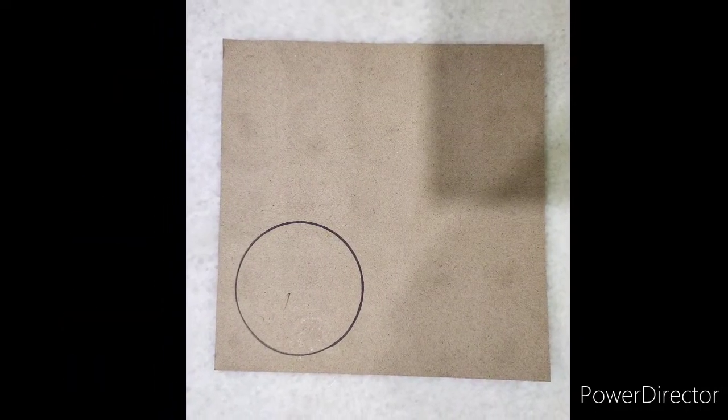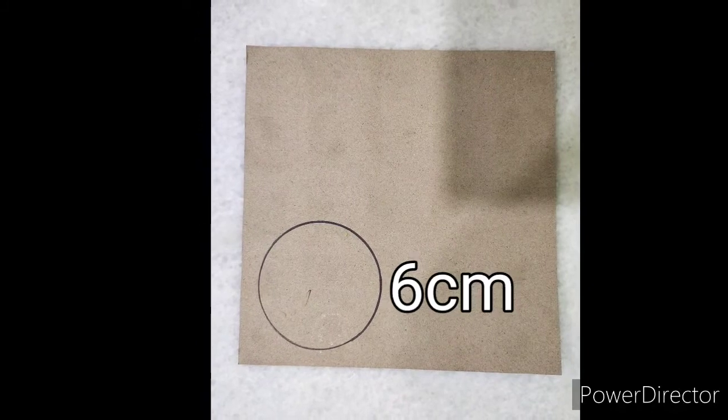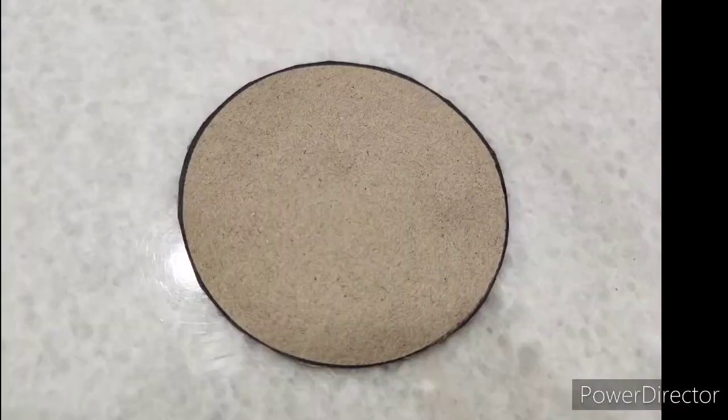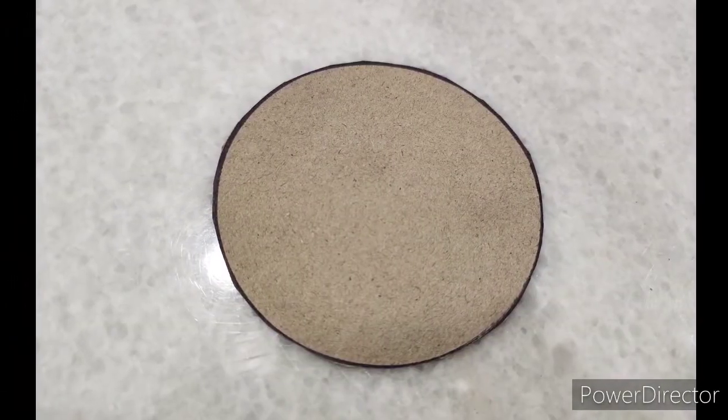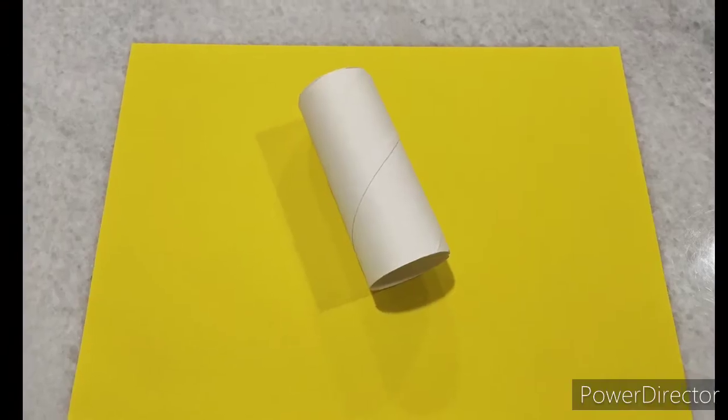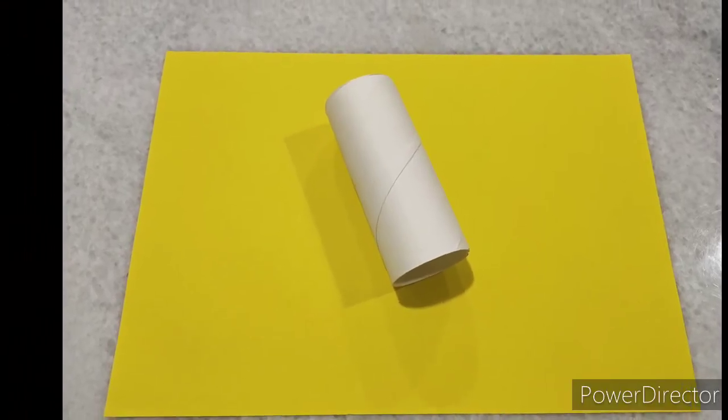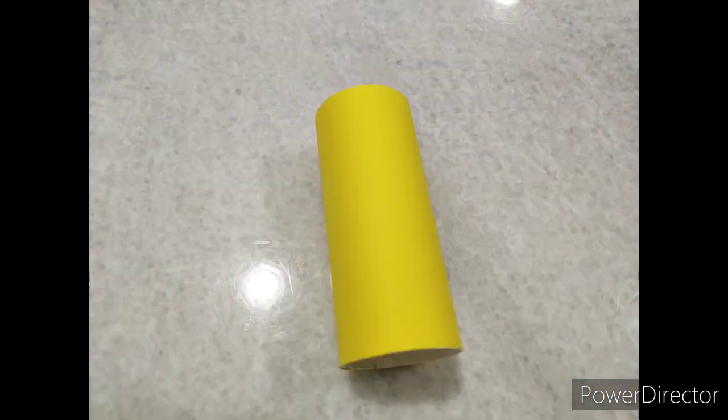First, draw a circle about 6 cm in diameter on the thick piece of paper, like this. Take a piece of paper and wrap the used toilet paper roll, like this.